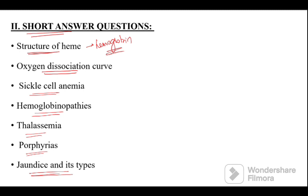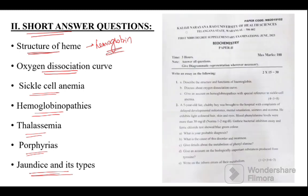If we see the recent example in KNRUHS June 2023 examination, structure and function of hemoglobin along with oxygen dissociation curve and hemoglobinopathies with a special reference of sickle cell anemia was given as an essay question.